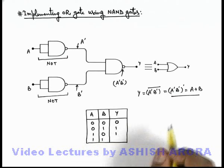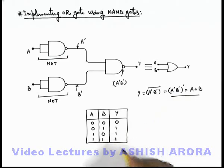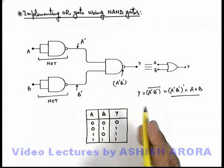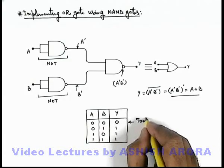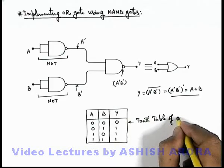Similarly for 1 and 1, again this will be 0 and 0, of which the prime will be 1. And we can see the truth table we are getting for this combination of three NAND gates is a truth table of OR gate.